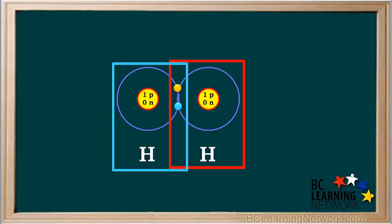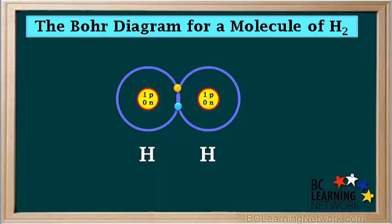The hydrogen atom on the right also feels like it has two electrons, giving it the stable electron arrangement of the noble gas helium. So as long as these two hydrogen atoms are bonded together, each one has the stability of a noble gas. This is the Bohr diagram for a diatomic molecule of hydrogen, H2. H2 is a stable molecule because as long as these two electrons are shared, each atom has noble gas stability.